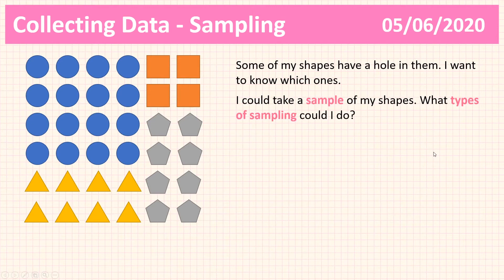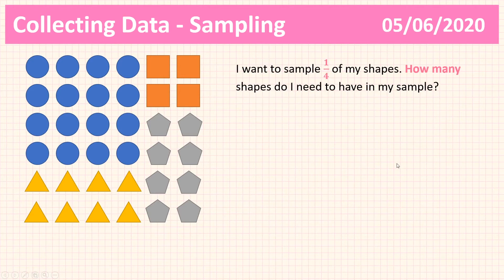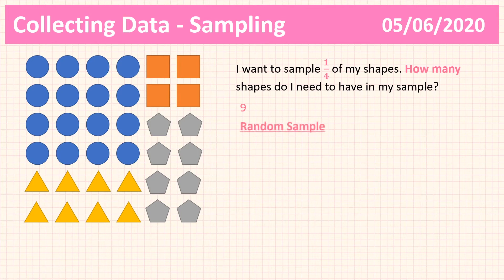So what types of samples could I do? I could do a random sample, a systematic sample, and a stratified sample. We're going to go through each one — what they are and how we do them with regards to our shapes. We'll start with how many things I want in my sample. I want my sample to be a quarter of all the shapes. I've got 36 shapes, and a quarter of 36 is nine, so I would need nine shapes in my sample.